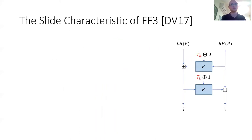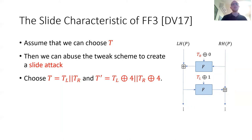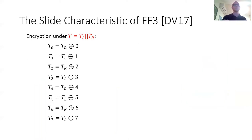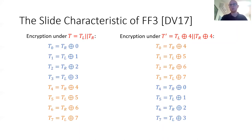In order to create the reduction from eight rounds to four rounds, we need a slide characteristic, which was presented by Dirac and Vaudenay in 2017. For that slide characteristic, assume that we can encrypt under any tweak we wish. We will need two tweaks: one tweak T, which is the tweak we are trying to attack, and a second tweak T prime, which is equal to the first tweak where each half is XORed with 4. If we encrypt under the original tweak T, then the tweak of each round is XORed with the number of the round. However, if we look at an encryption under the related tweak T prime, then rounds 0 through 4 are XORed with 4 through 7, and rounds 4 through 7 are XORed with 0 through 4. What that means is that the first half of encryption under T is equal to the second half of encryption under T prime, and vice versa.